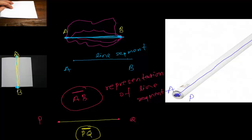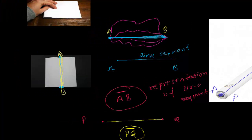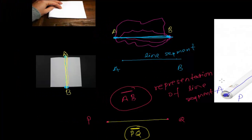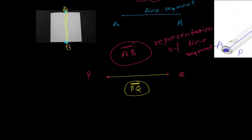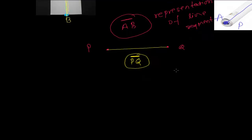After learning the line segment, we should get the idea of what a line is. Here is a line — one point is P and another point is Q, and both are connected. This is a line segment.